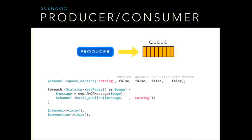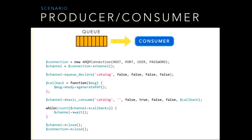On the other side, the consumer wants to consume messages using the basic_consume function, saying we want to consume messages from the catalog queue. For each message, we apply a callback function. The callback receives a message object whose body is our page object, so we can call the generatePDF function. The while cycle means that as long as there are callbacks, we wait for new messages — preventing the consumer from quitting immediately. Also note that we declare the queue both in the consumer and in the producer, but the queue is created only once due to the first flag being set to false.